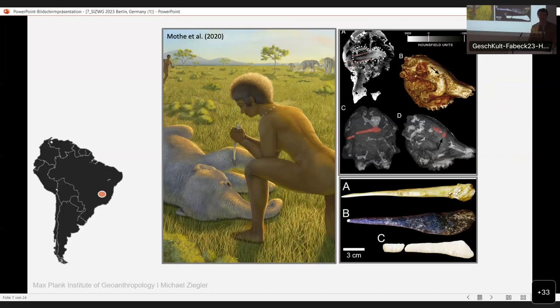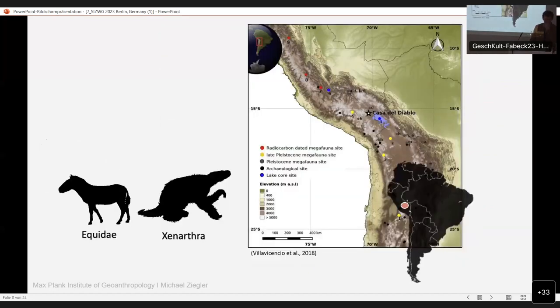We do have some good direct evidence of human hunting in South America. Specifically, this site in Brazil shows a juvenile Notiomastodon platensis being impaled potentially by a bone tool. Whereas other sites that have similar faunal assemblages, as we move more northward, they have no direct evidence of human remains, but there are similar faunal assemblages that go extinct in the same sort of time span.